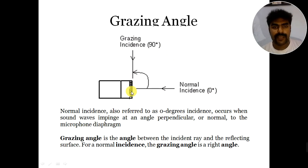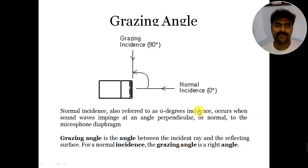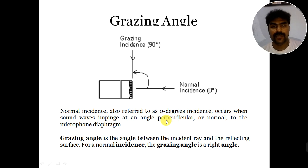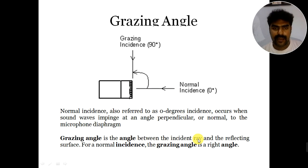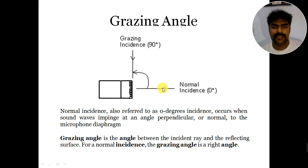The grazing angle is defined as follows: this is the surface of the microphone, and this is the normal incidence. Normal incidence is referred to as zero degree incidence, and it occurs when sound waves are incident perpendicular to the microphone diaphragm. Grazing angle is the angle between the incident ray and the reflecting surface. For normal incidence, the grazing angle is a right angle — the angle between the reflecting surface and the incident ray is 90 degrees.